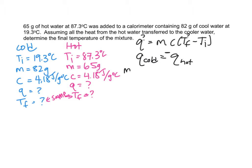And then we can say mass of cold times specific heat of cold times t final, which is the same for both, minus t initial cold is equal to the opposite of mass of hot, c of hot, t final minus t initial hot.